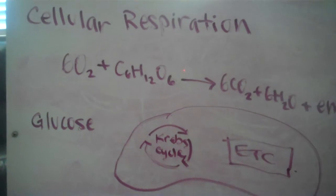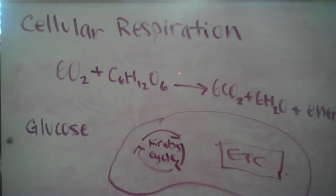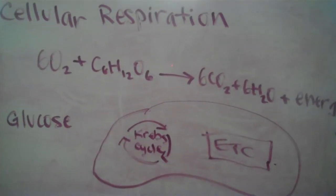The three processes of cellular respiration are glycolysis, the Krebs cycle, and the electron transport chain.